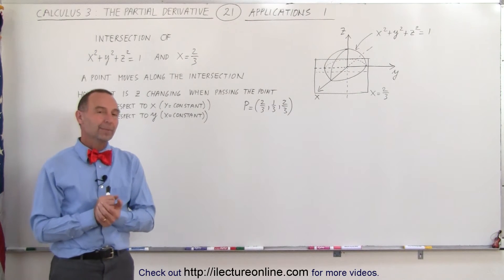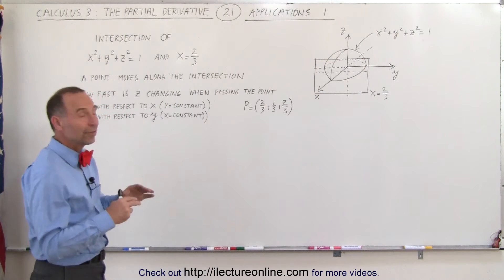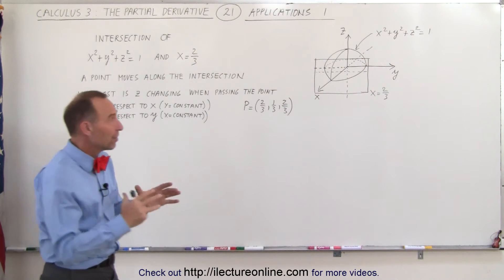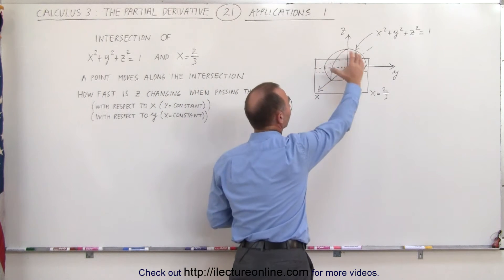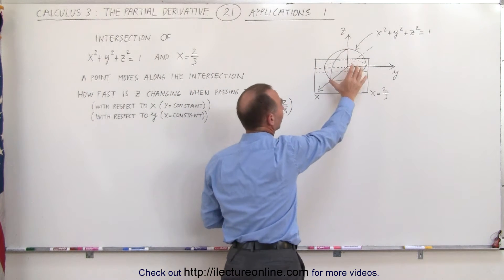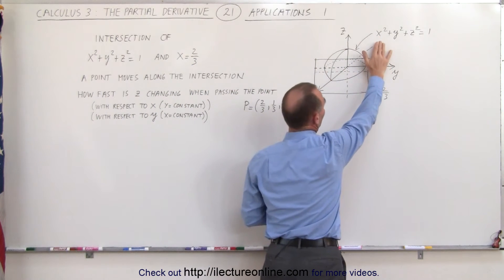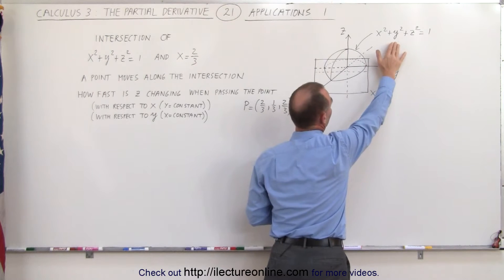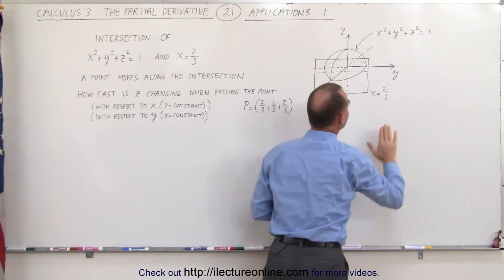Welcome to ElectronLine. In this example we're going to take a sphere. I've only drawn the top half of the sphere, but the sphere is defined by the equation x squared plus y squared plus z squared equals 1.